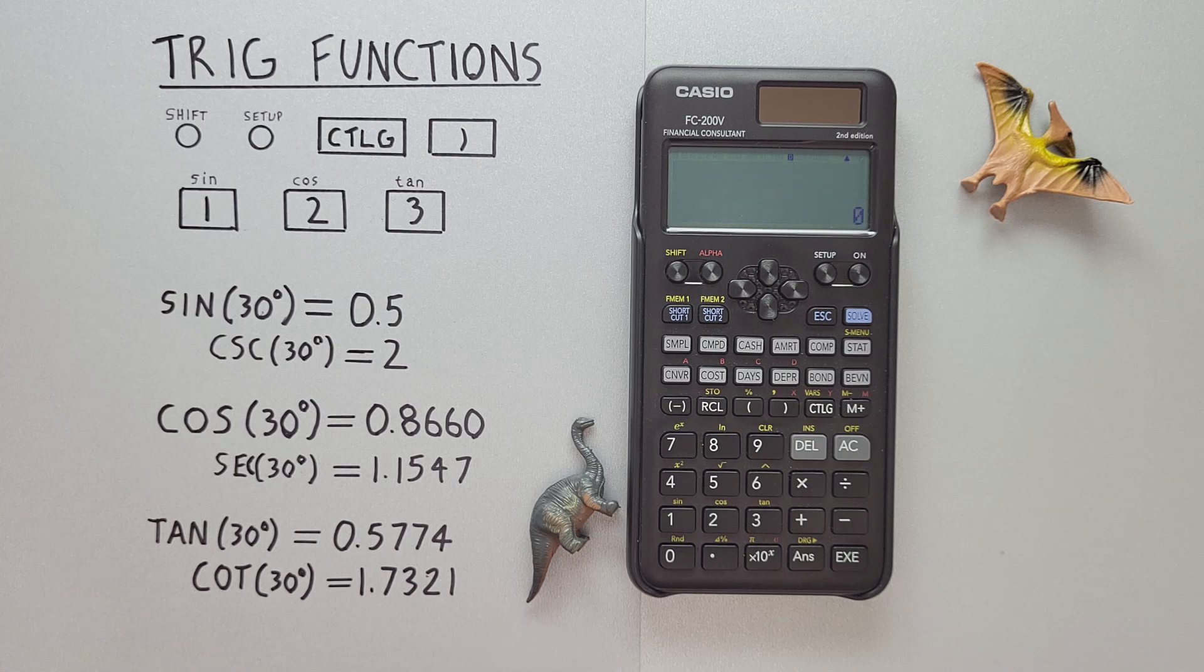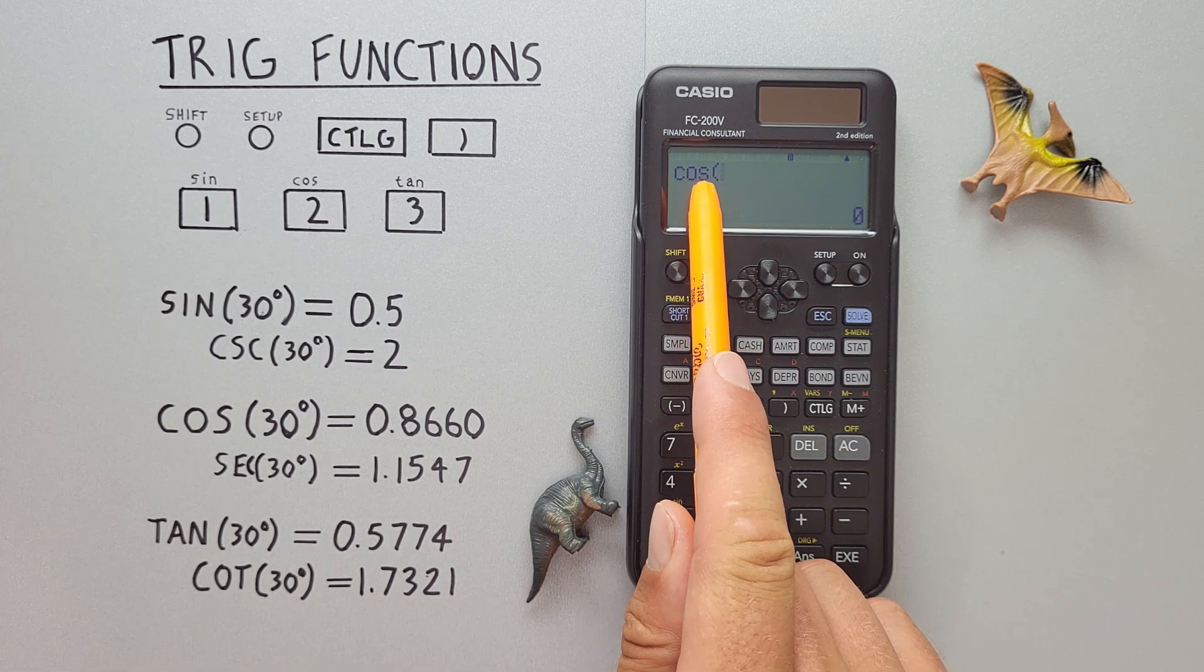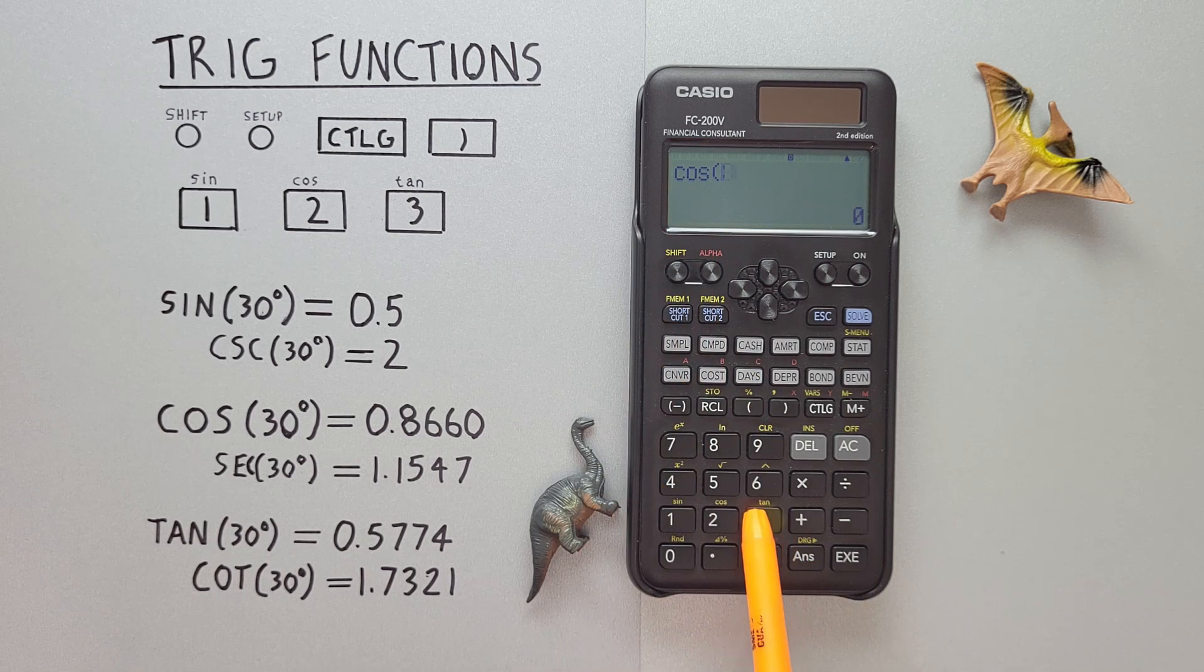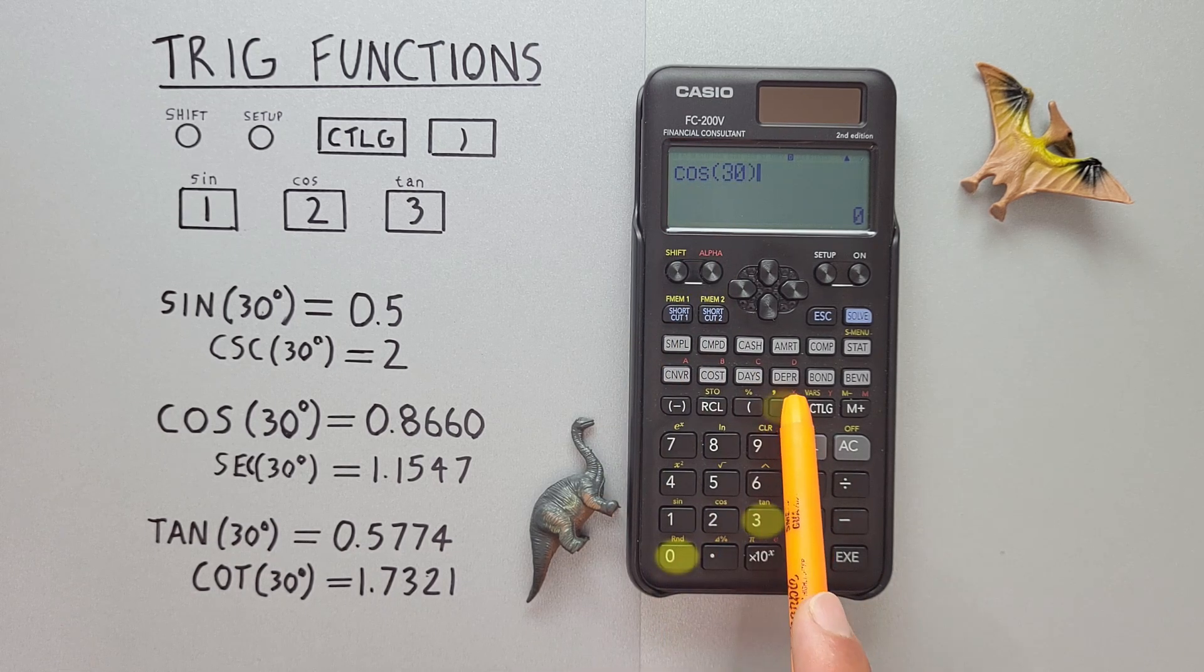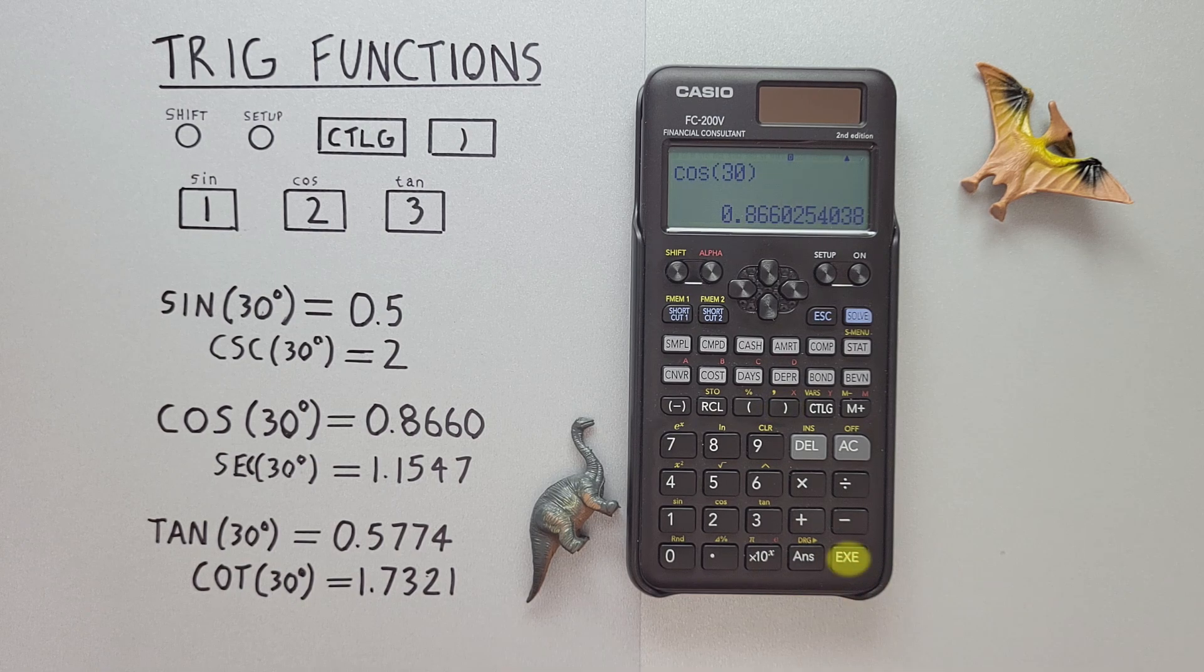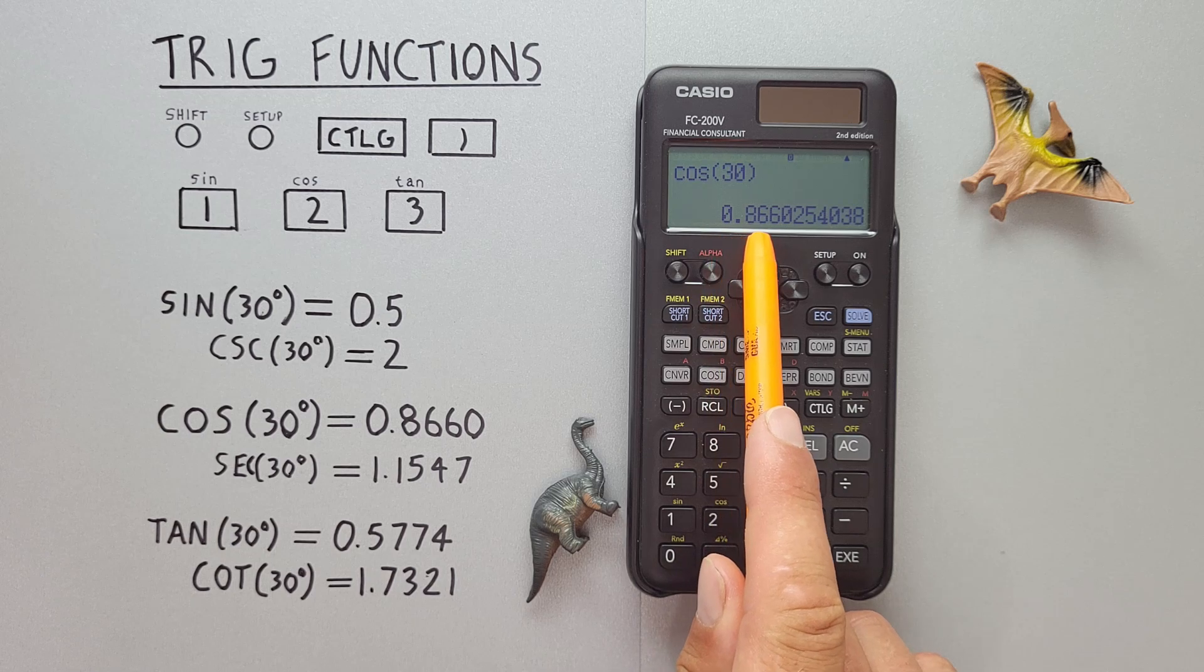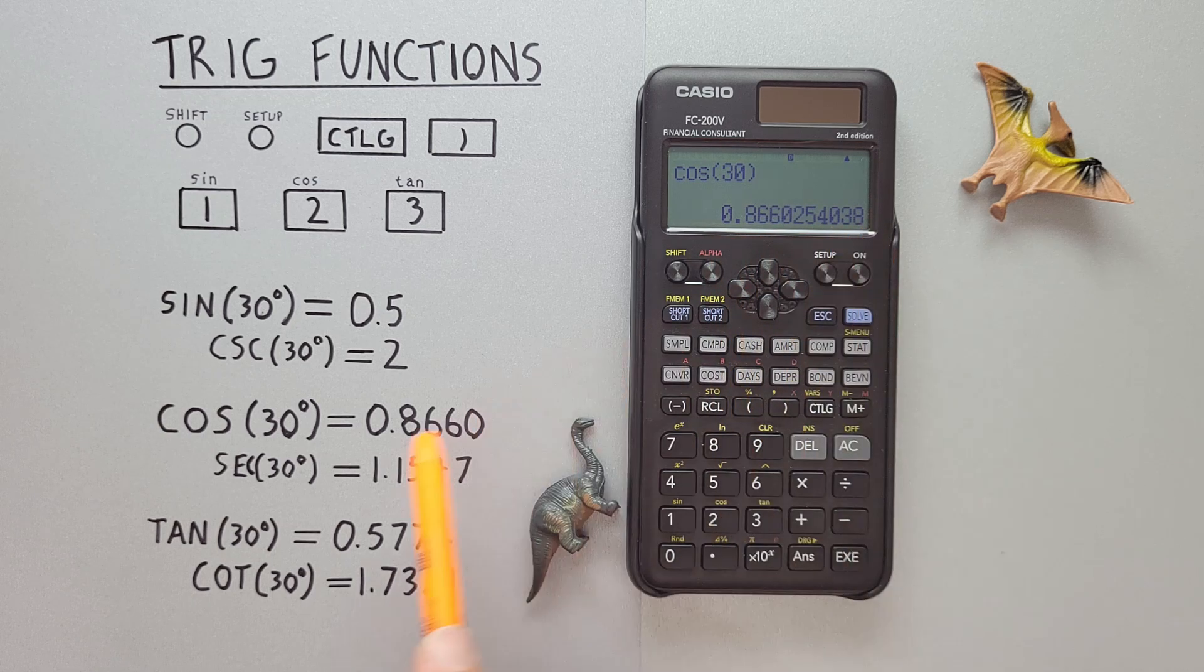For cosine, we use shift two to get cosine. And then enter 30, close our bracket, and hit exe. And we see we get cosine of 30 degrees is equal to 0.8660, etc, which is correct.